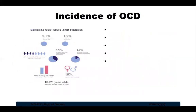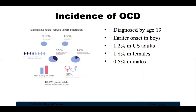OCD is a common disorder affecting adults, adolescents and children worldwide. Most people are diagnosed by age 19, typically with an earlier onset in boys than girls, and onset after age 35 is rare. Based on diagnostic interviews among US adults aged 18 or older, an estimated 1.2% have OCD. Prevalence was higher for females at 1.8% than males at 0.5%, and the lifetime prevalence of OCD among US adults was 2.3%.